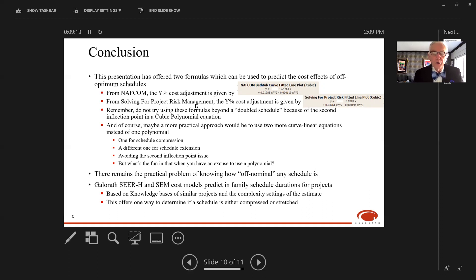Of course, a more practical approach would have been to use two curve linear equations instead of one polynomial—one for the left side of the bathtub curves addressing schedule compression, and another for the right side modeling schedule expansion. That would have avoided the second inflection point issue, maybe even given a better R squared. But hey, what's the fun in that when you have an excuse to use polynomials?